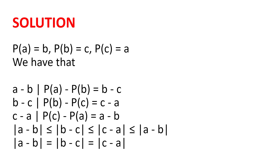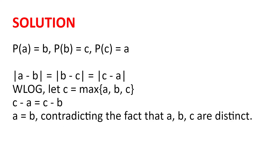And so |a - b| = |b - c| = |c - a|. Without loss of generality, let c be the maximum of a, b, and c. Note we can't just impose an order without loss of generality, as a, b, c are cyclic and not symmetric. What we have is that (c - a) = (c - b), which means a = b, contradicting the fact that a, b, and c are distinct. And so we cannot have a polynomial such that p(a) = b, p(b) = c, and p(c) = a.